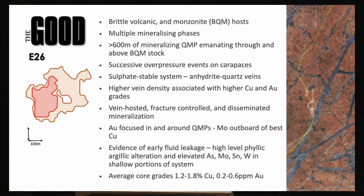We have more than 600 metres of that quartz monzonite porphyry complex — the grade givers — emanating through and above the stock environment and out into the volcanics. That is where we get our highest hypergene grades. The system has been actively constrained by brittle, impermeable, andesitic to trachytic volcanics, producing very high hypergene grades: Lift One was about 20 million tonnes mined at 1.4% copper and nearly 0.5 grams per tonne gold, with some draw points at 4 to 6% copper.